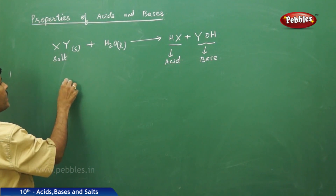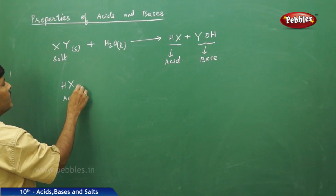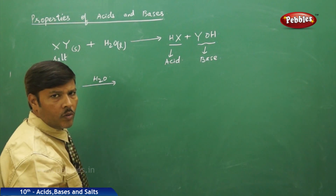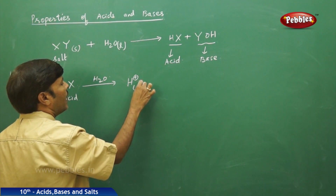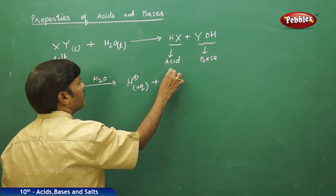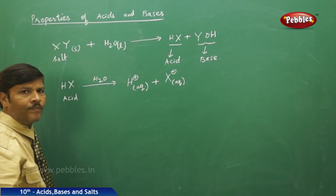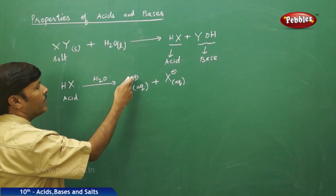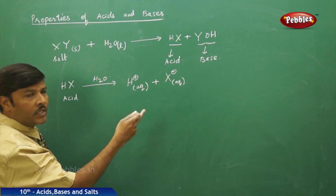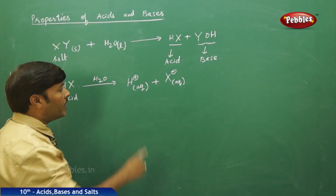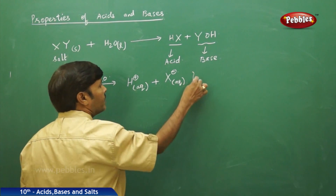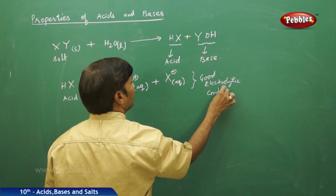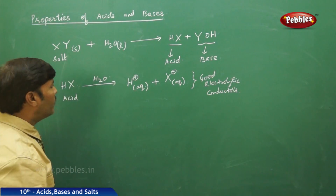If HX is an acid, then when you dissolve HX in water, it dissociates or ionizes to produce H+ ion (aqueous) and X- ion (aqueous). That means all acids, when dissolved in water, give away ions. Acids are characterized by the presence of H+ ions — by liberating or producing H+ ions. Because they are able to furnish ions, all acids are good electrolytic conductors.